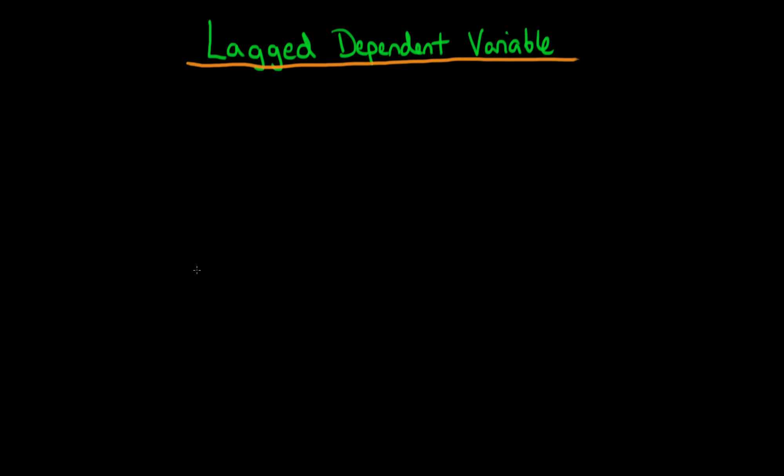In this video I want to talk about the issue of having a lagged dependent variable in your model in the context of the strict exogeneity assumption.